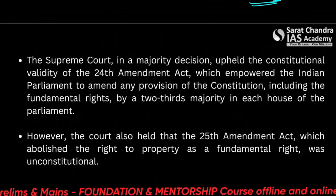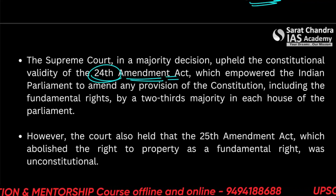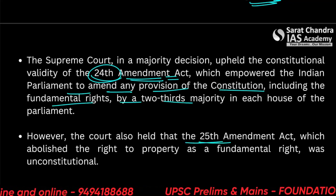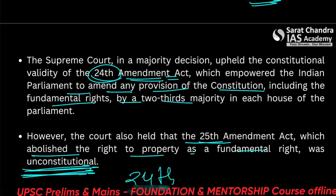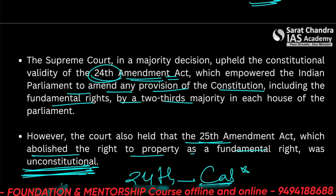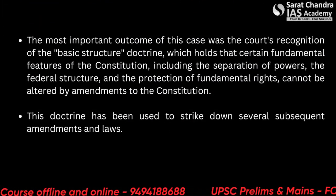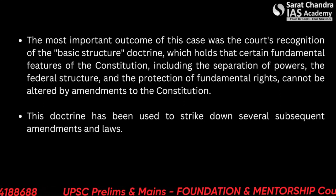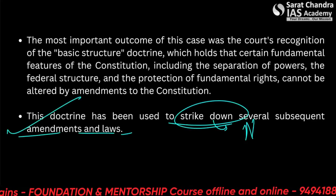The Supreme Court, in a majority decision, upheld the constitutional validity of the 24th Amendment Act — that is, the power to change or alter any provision of the constitution. However, the 25th Amendment Act, which abolished the right to property as a fundamental right, was held to be unconstitutional. The most important outcome of this case was the court's recognition of the basic structure doctrine, which holds that certain fundamental features cannot be changed or amended. The doctrine has since been used to strike down several subsequent amendments and laws, such as the NJAC of 2015.